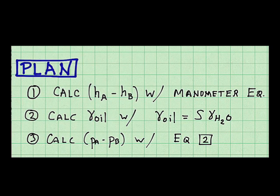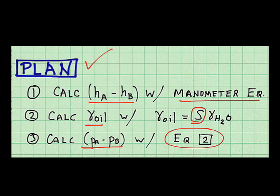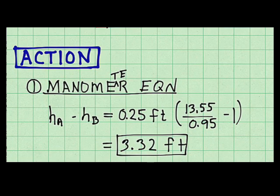Now that I've found my ideas for reaching my goals, I can make a step-by-step plan. So here's my plan. First, I'll calculate the difference in piezometric head, and I'll use a manometer equation. Then I'll calculate the specific weight of oil, using the definition of specific gravity. And lastly, I'll calculate the difference in pressure using this equation, which I just derived. And in my documentation, I label this as equation 2.